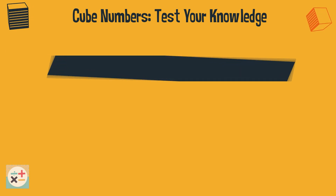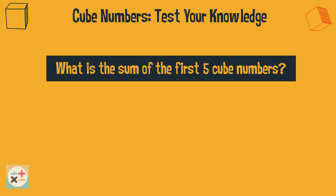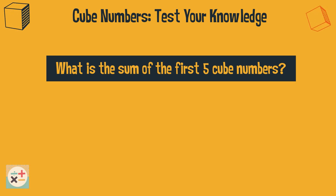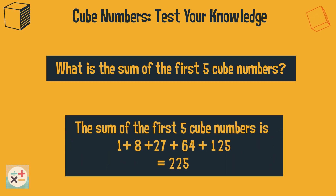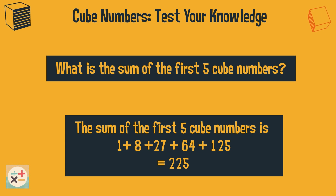Question 5. What is the sum of the first 5 cube numbers? This is 1 plus 8 plus 27 plus 64 plus 125, which equals 225.